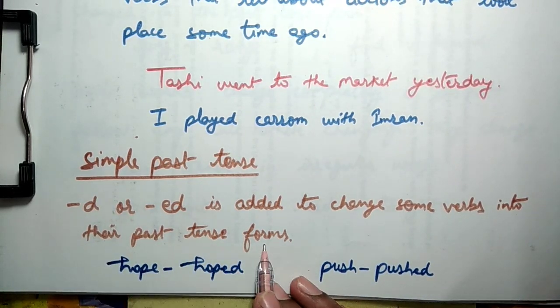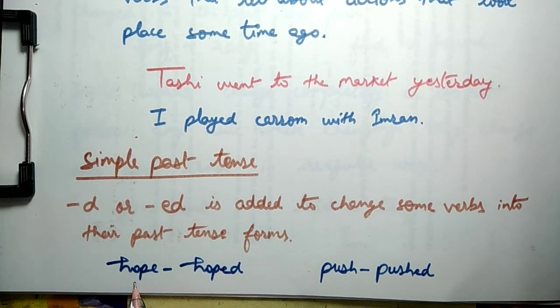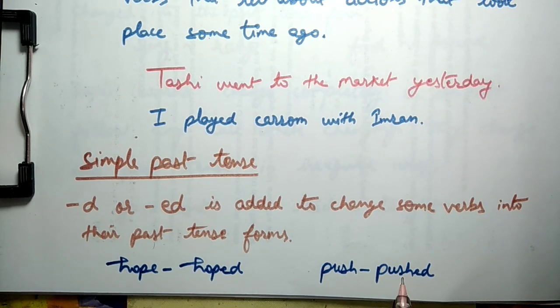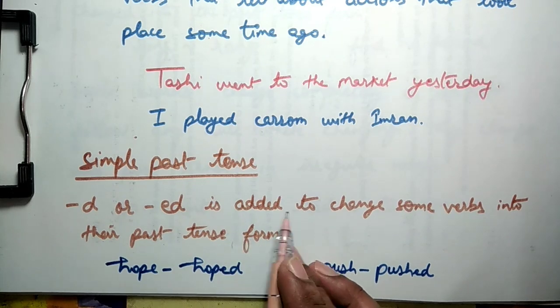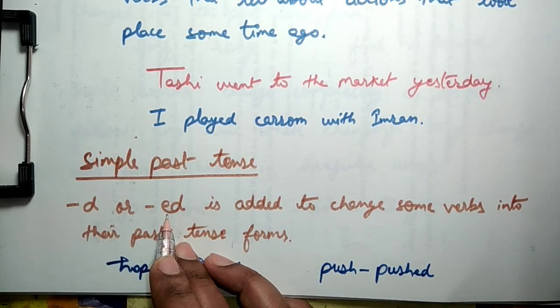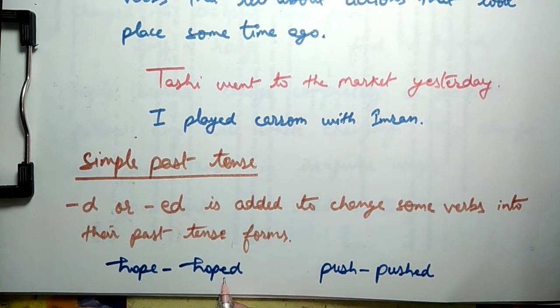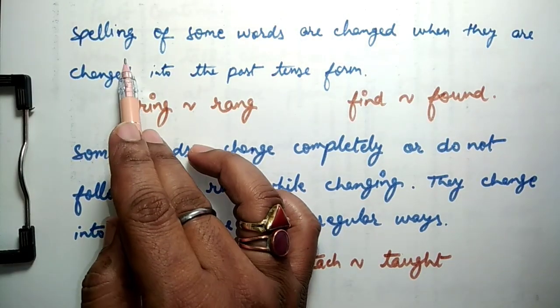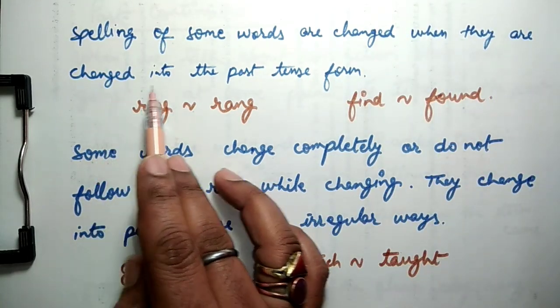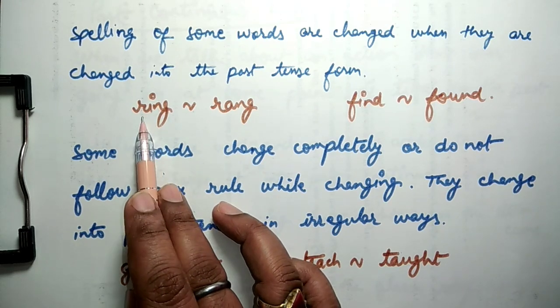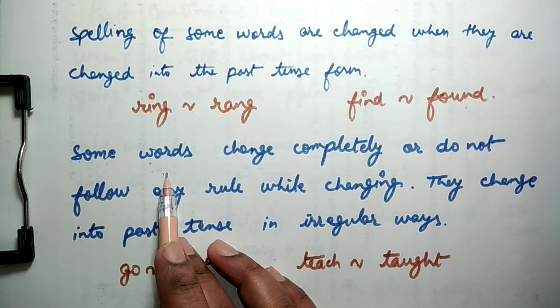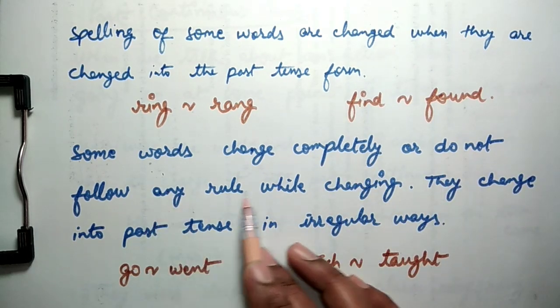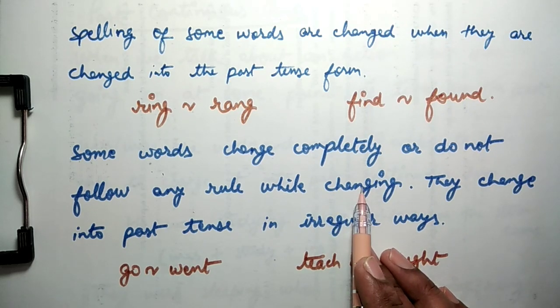Their past tense forms, example: hope, the past tense of hope is hoped. Similarly, simple past tense of push is pushed. If you want to talk about simple past tense, d or ed is added to change some verbs into their past tense form. Also, spelling of some words are changed when they are changed into past tense form. Example: ring becomes rang and find becomes found. In simple past tense, some words change completely or do not follow any rule while changing to simple past tense. They change into past tense in irregular ways. Example: go becomes went and teach becomes taught in simple past tense.